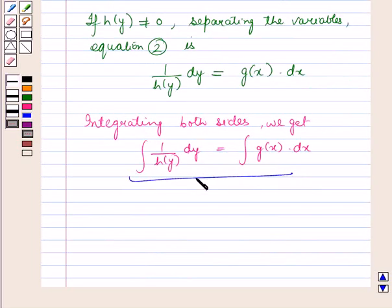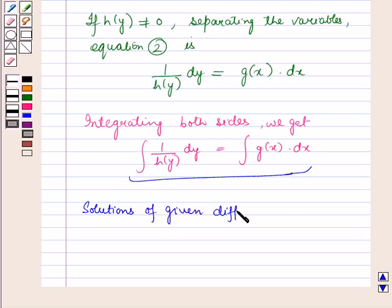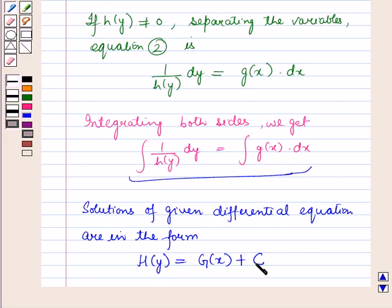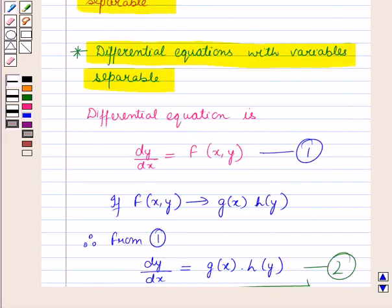This equation provides the solution of the given differential equation in the form H(y) = G(x) + c, where H(y) and G(x) are the anti-derivatives of 1/h(y) and g(x) respectively, and c is the arbitrary constant. So this is how we find the solution of differential equations with variables separable.